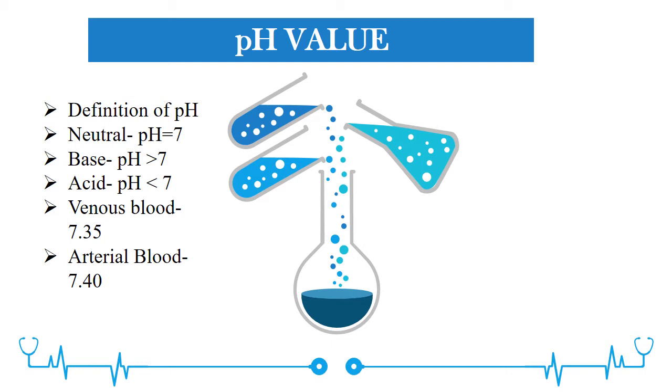Generally, human blood is slightly basic. The pH value of venous blood is about 7.35 and for arterial blood, it is about 7.40.